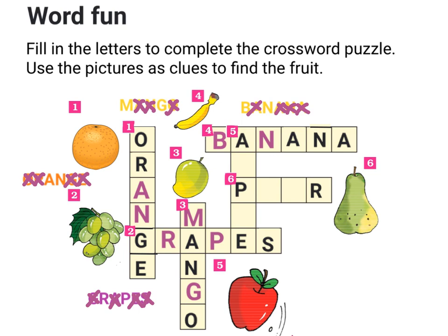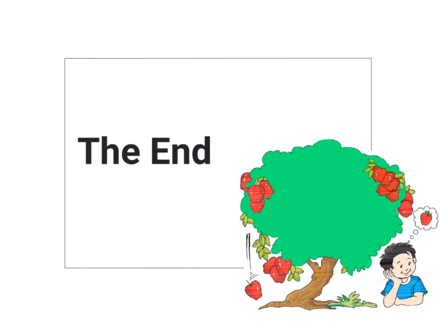The next fruit is apple. The spelling of apple is A-P-P-L-E. I already have A, P, and E, so I will write P and L. The last fruit is a pear. The spelling of pear is P-E-A-R. I already have P and R, so I will write E and A. Now we have come to the end of this video. In this video, we answered questions about the poem 'If I Were an Apple.' See you next time.